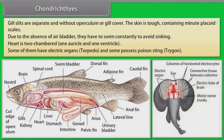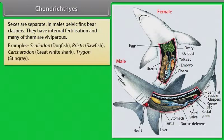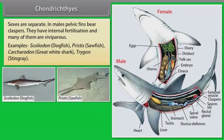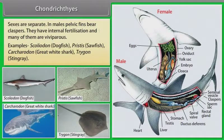Some of them have electric organs (Torpedo) and some possess a poison sting (Trygon). Sexes are separate. In males, pelvic fins bear claspers. They have internal fertilization and many of them are viviparous. Examples: Scoliodon (Dogfish), Pristis (Sawfish), Carcharodon (Great White Shark), Trygon (Stingray).